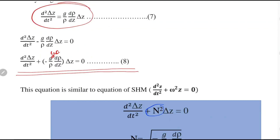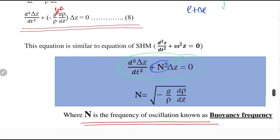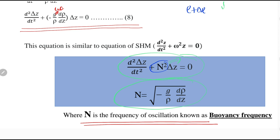Buoyancy frequency has importance in the internal waves of the ocean. Consider an oceanic condition where the upper layer has density rho and the lower layer has density rho plus delta rho. As discussed earlier, consider a water parcel in the upper layer with density rho. Any disturbance such as wind or tide causes the movement of the water parcel downward. Since this water parcel is in a stable equilibrium condition, it starts to oscillate. The equation of this oscillation is simple harmonic motion, and the frequency of the oscillation is N, which is the buoyancy frequency. Hence, buoyancy frequency is the frequency of oscillation of internal waves in the ocean. Thank you.